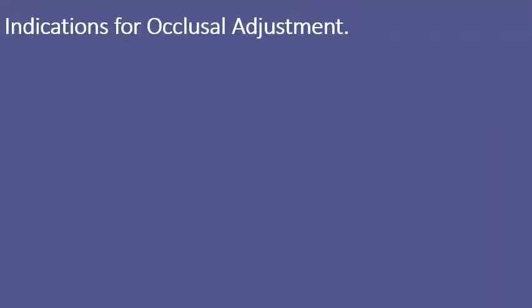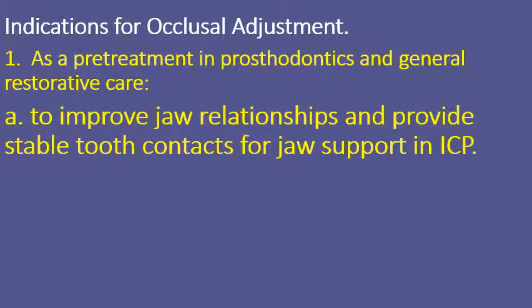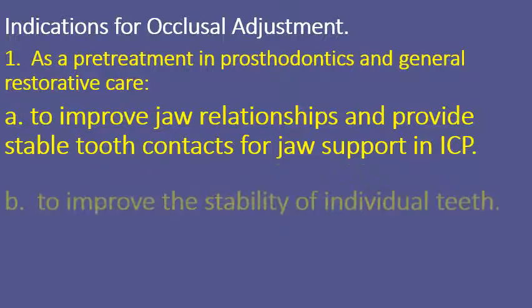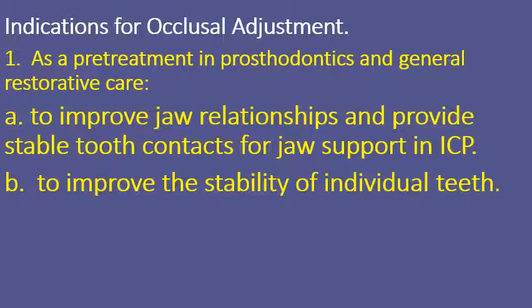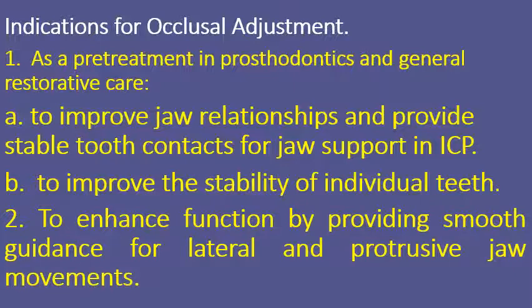Indications for occlusal adjustment: first, as pre-treatment in prosthodontic and general dental care. Before doing any prosthesis, whether fixed or removable, improve the occlusal relationship and provide stable tooth contacts in intercuspal contact position. Also, to improve the stability of individual teeth — if there are over-erupted teeth with premature contacts, correct them. And to enhance function by providing smooth guidance for lateral and excursive and protrusive movements on the anterior teeth.